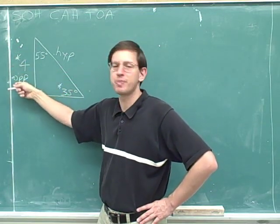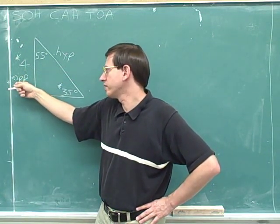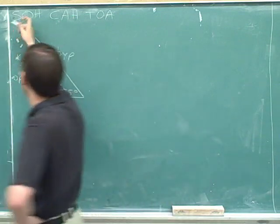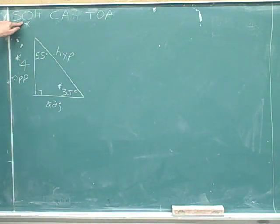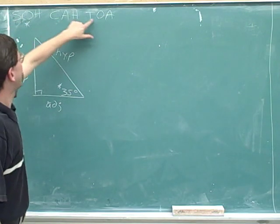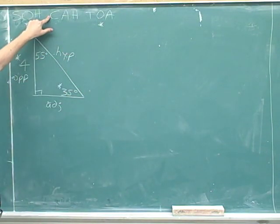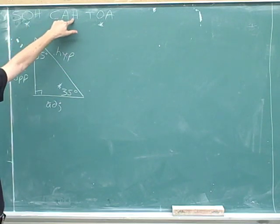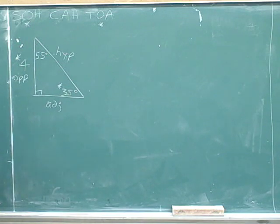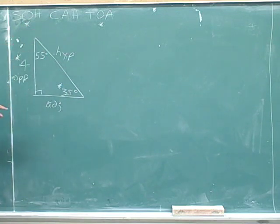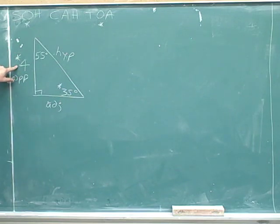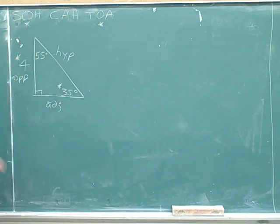So the only trig functions that are going to be useful are the ones that involve the opposite side. Sine involves the opposite side, so I'll mark it with an asterisk. Tangent also involves the opposite side, so I'll mark that too. But cosine is adjacent over hypotenuse — it never refers to the opposite side. So if we tried to use cosine we would never have any opportunity to use the number 4. The cosine is not going to be useful here because the given side is opposite to the 35-degree angle.